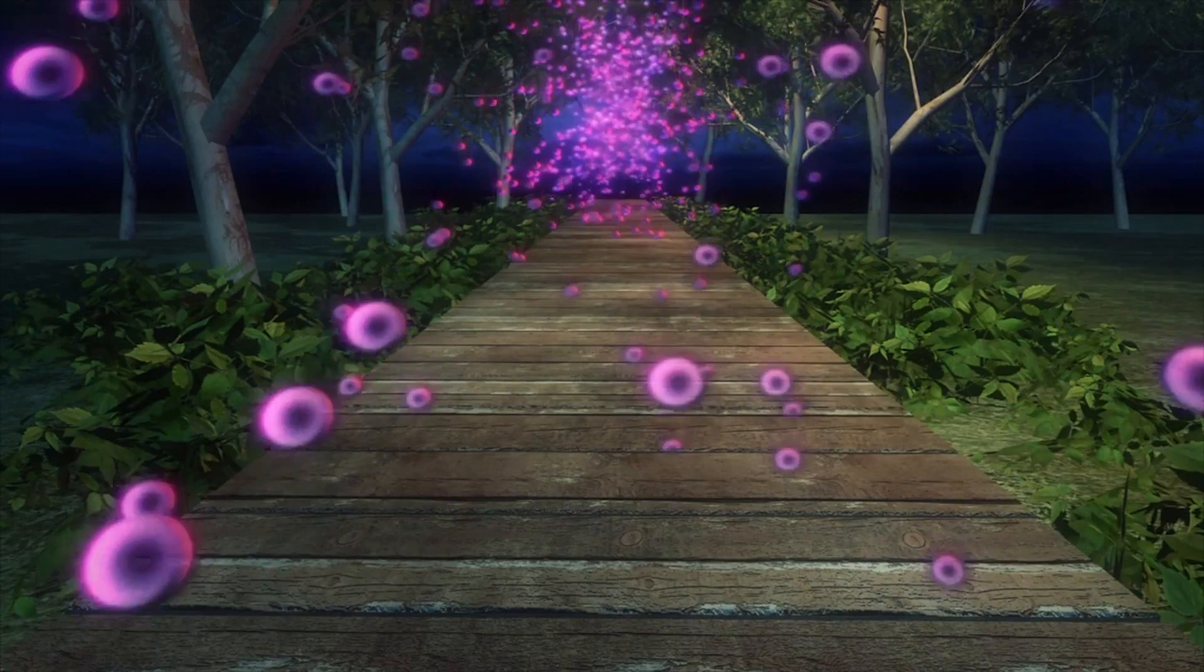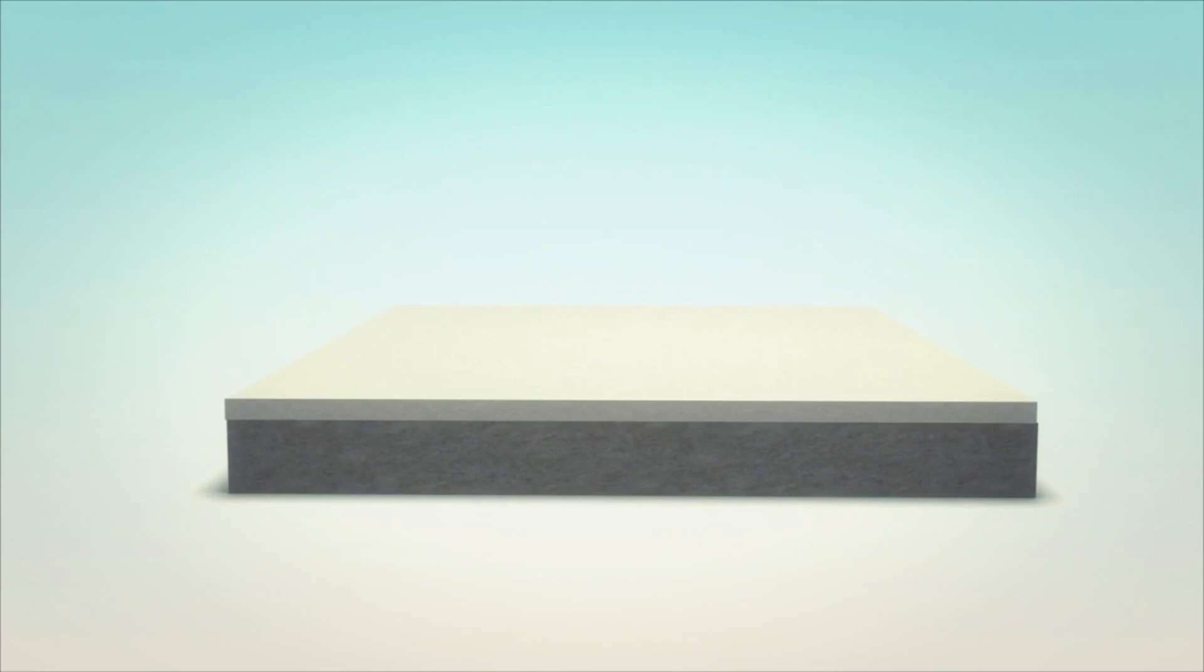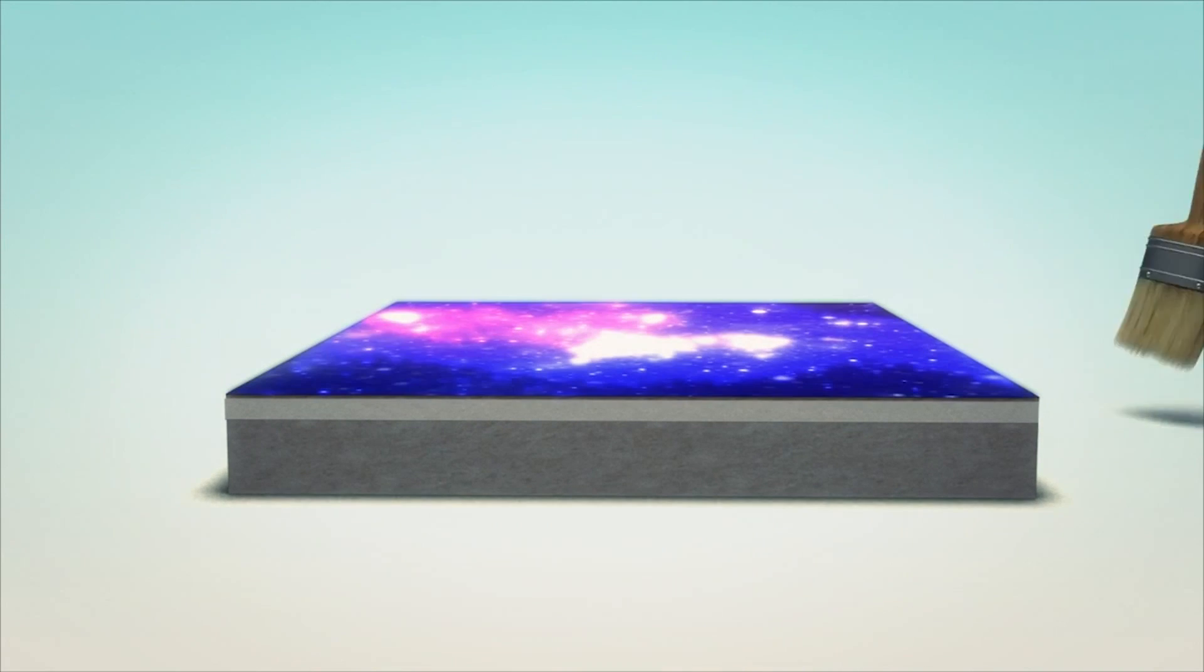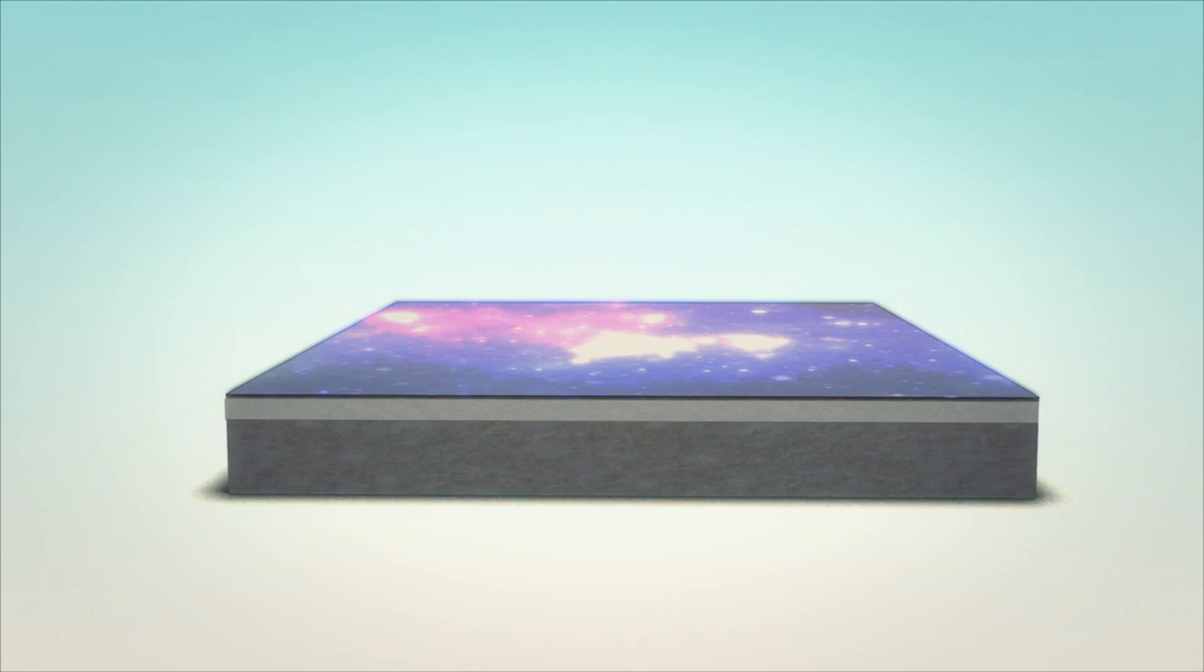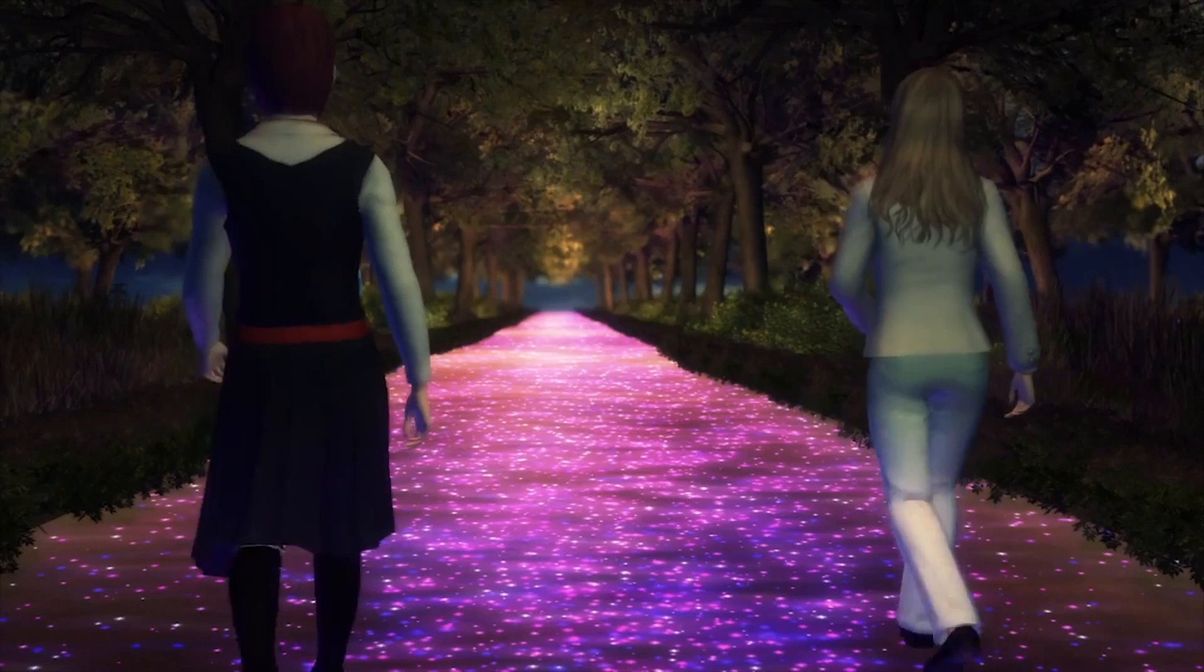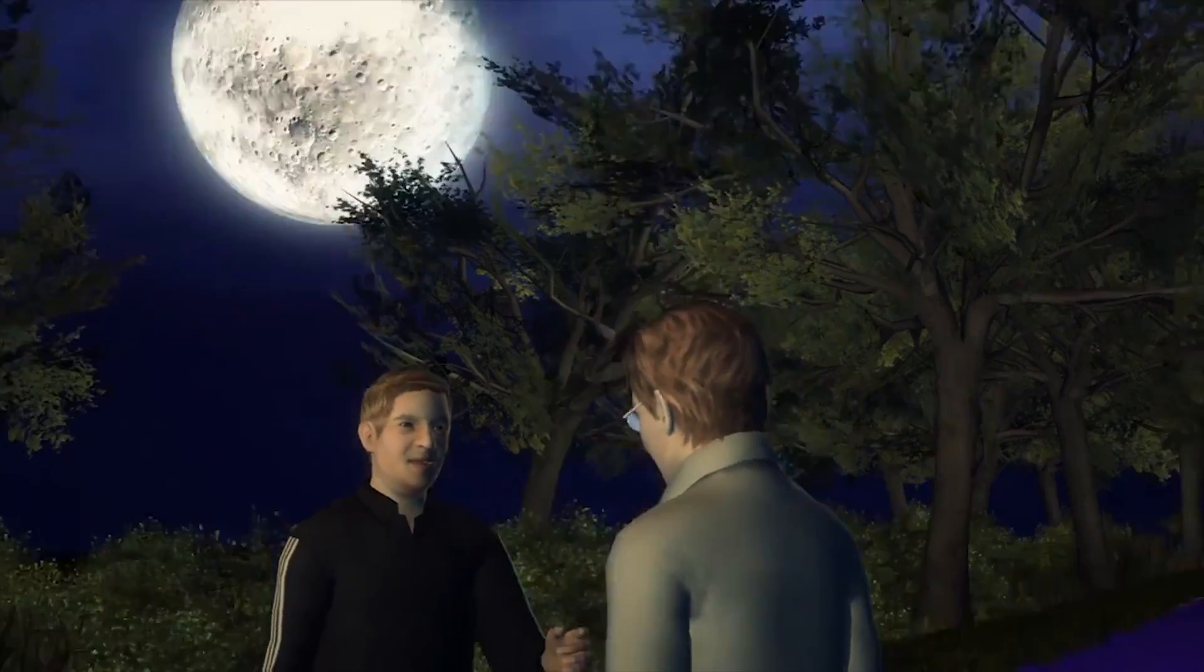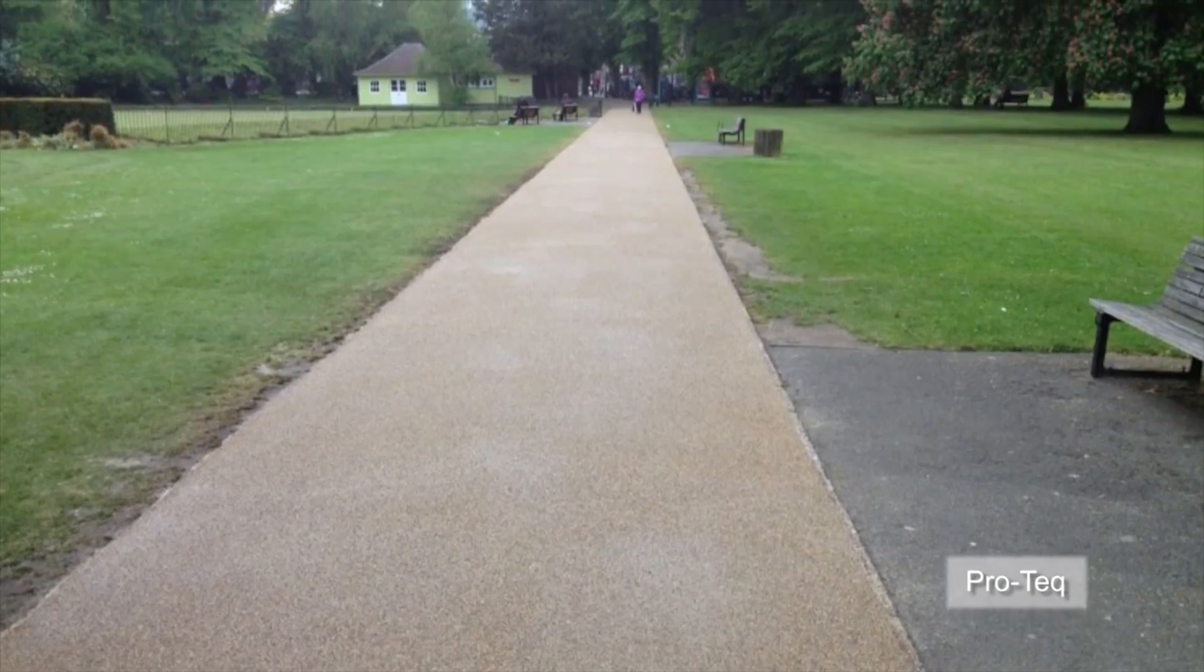Different materials will be applied to the path. First a polyurethane base and aggregate followed by a luminescent material and a polyaspartic top coat. The star path absorbs UV light during the day and releases it at night.